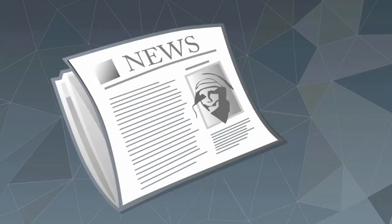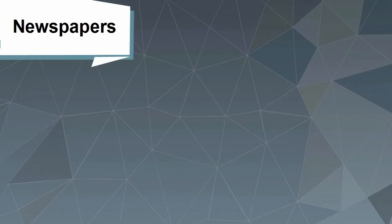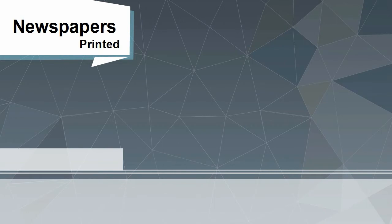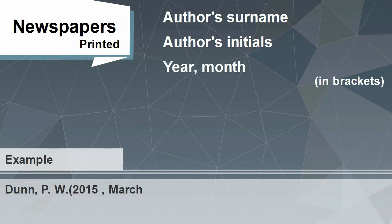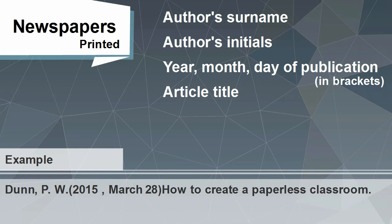How to reference a newspaper in print. First, give the author's surname followed by his initials, then in brackets write the year followed by the month and date of publication. Next, write the title of the article. You should use a capital letter for the first word in the title but not the remaining words.